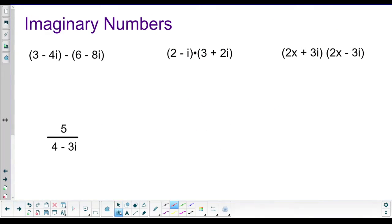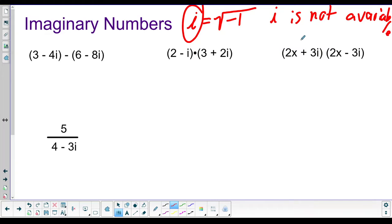Next lesson. Imaginary numbers. Remember the definition of i, just for those of us in the back who weren't listening. It's the square root of negative 1. But you just treat it like a variable. i is not a variable, but it acts like one. So just pretend it is. And you'll get through this.